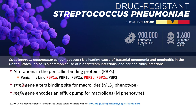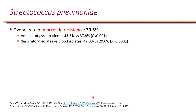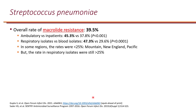Strep pneumo can also acquire the RMB gene, which alters the binding site for macrolides, as well as the MEF-A gene, which encodes an efflux pump for macrolides. The overall rate of macrolide resistance is almost 40%, and the rate is actually higher in ambulatory care compared to the inpatient setting. The rate is also significantly higher in respiratory isolates compared to blood isolates. In some regions rates were less than 25%, but even there, respiratory isolates specifically were still higher than 25%. In California, the rate is higher in Southern California compared to Northern California.